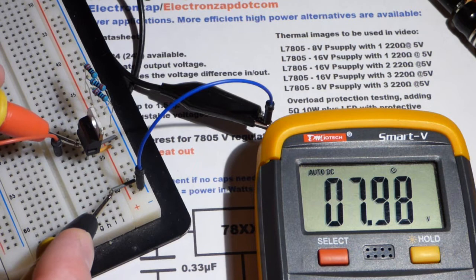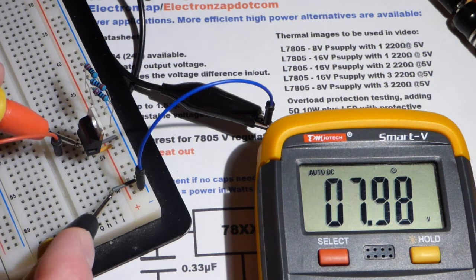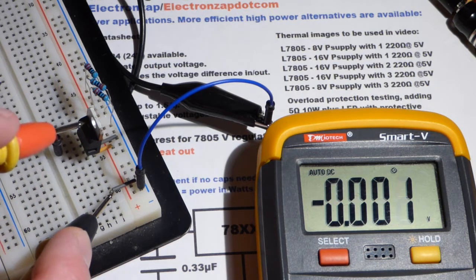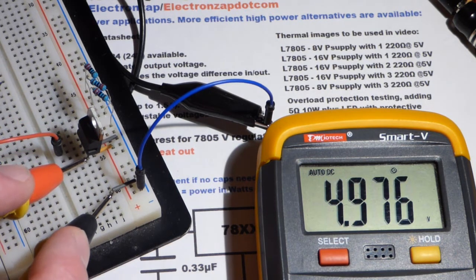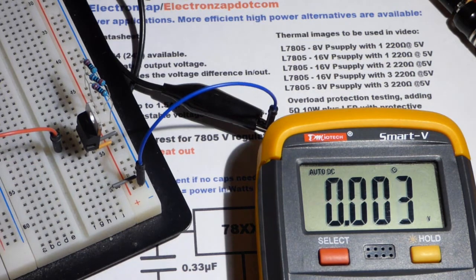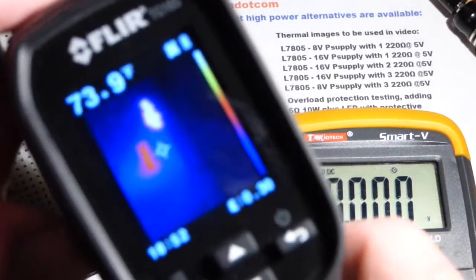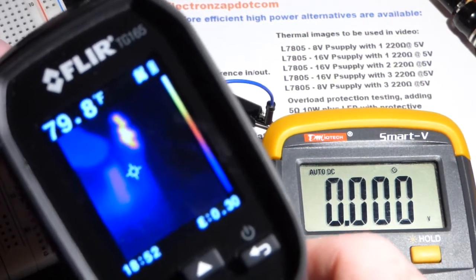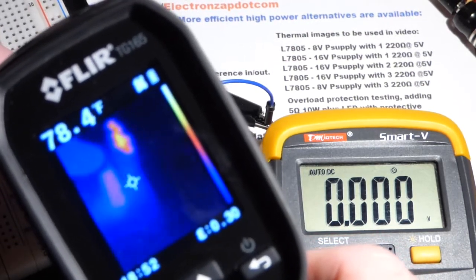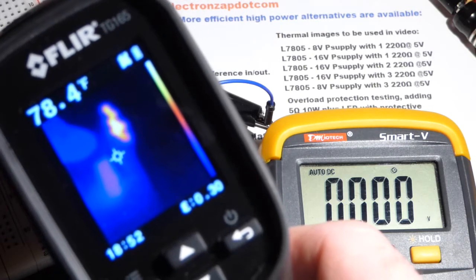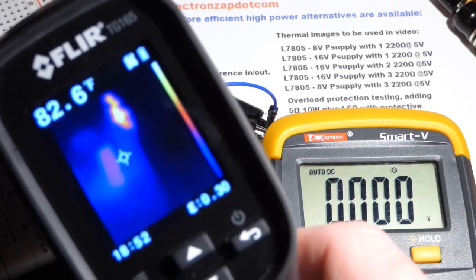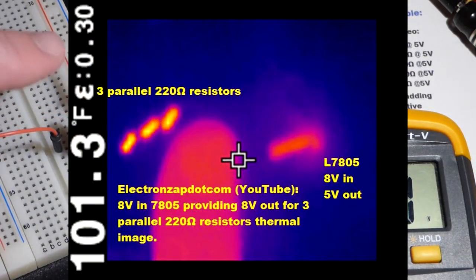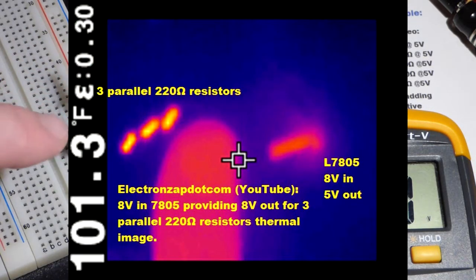And now our three parallel resistors with the 8 volts coming to the voltage regulator, but of course 5 volts going to the resistor. Now when we look at it you can see that the resistors are quite a bit hotter than the 7805. So it's wasting a lot less energy now, because we're providing a certain amount of power to the resistors regardless of the voltage.